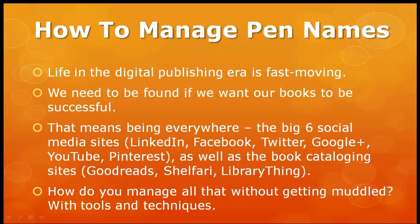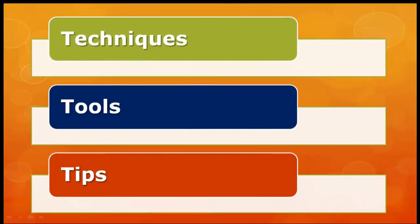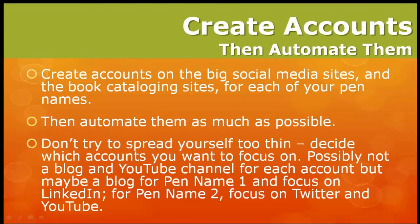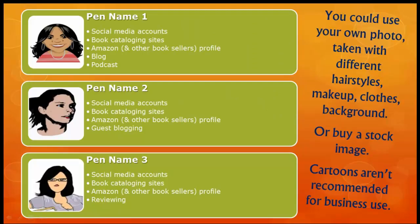If you're using multiple pen names, you could very easily get very muddled. So let's look at techniques and tools, software and apps, and some tips as well. The first thing to do is create accounts on the big social media sites and the book cataloguing sites for each of your pen names, then automate those as much as possible so that posting on one site feeds others. Focus on one or two sites for each name, depending on your genre, what you're trying to achieve, and the audience you're trying to reach.